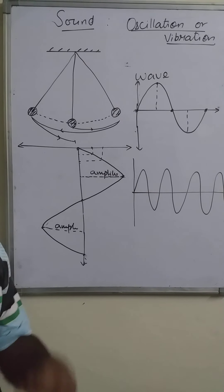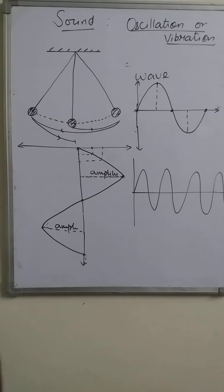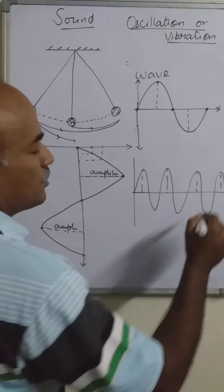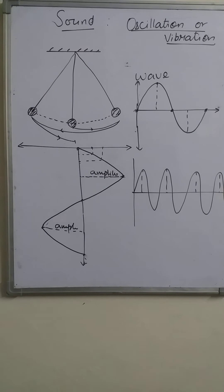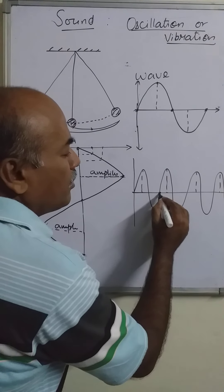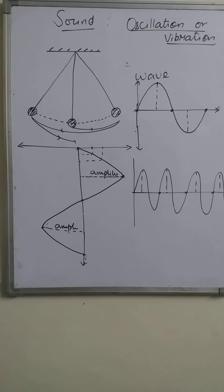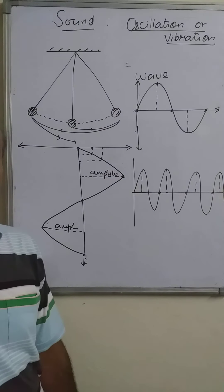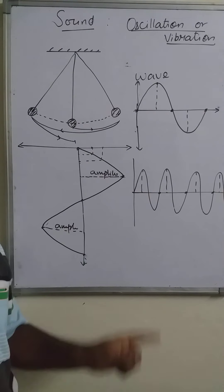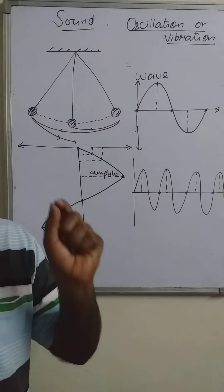This represents the continuous oscillation of the body about its mean position, in which the maximum displacement — that is the amplitude — can be read from the graph. While oscillating, this represents one oscillation, this represents two oscillations, and here three oscillations. The number of oscillations can be counted from the graphical representation.